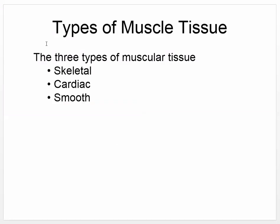There are three different types of muscles: skeletal, which is what we're going to be talking about almost exclusively; cardiac, which we'll cover when we get to the cardiovascular system; and smooth muscle, which you think about in terms of blood vessels and intestines.